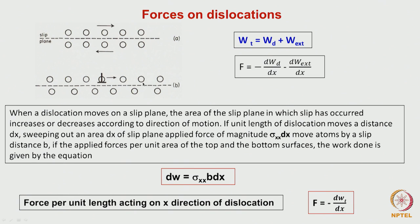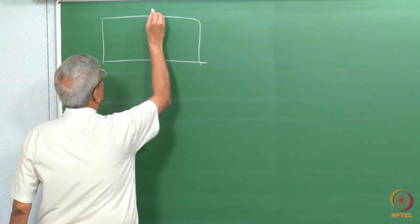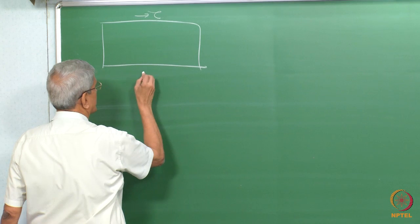We are seeing the image of a moving dislocation. When the dislocation moves, we can consider that the applied stress is doing some work on the material. When a dislocation is present, there is a stress and strain field around it. We can calculate the self energy. When we apply an external stress in a direction, the dislocation moves from one position to another.